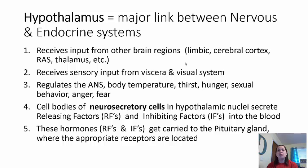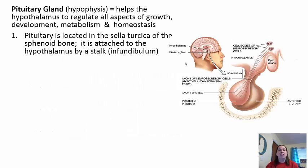We're going to talk to the pituitary gland first, and then cover some of the releasing and inhibiting factors. The pituitary gland is also called the hypophysis. It helps the hypothalamus regulate all aspects of growth, development, metabolism, and homeostasis. It is located in the sella turcica of the sphenoid bone — a saddle-like structure — and the pituitary sits inside of it.